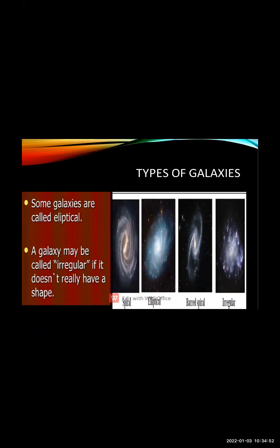Now let us talk about the different things present in the Milky Way. It includes celestial bodies such as clusters of stars, nebulae, clouds of gases, dust, dead stars — stars which are no longer alive — and newly born stars. When a star comes to an end, new stars are born in the galaxy. So the things situated in galaxies are known as celestial bodies.